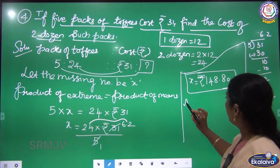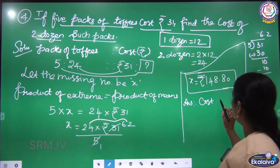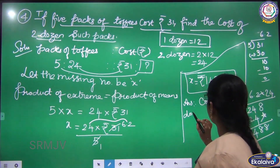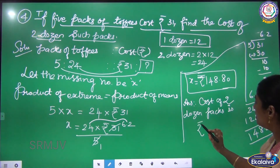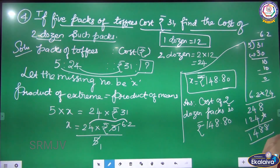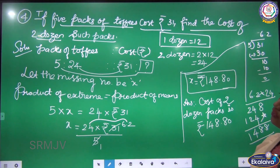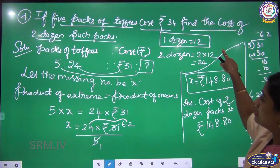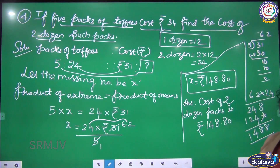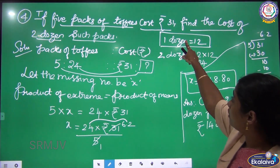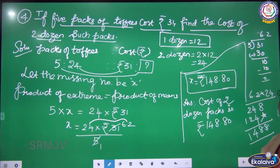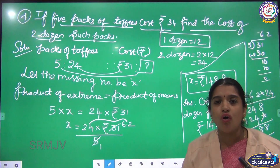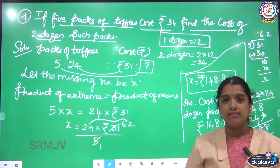Now I am going to write the answer. Cost of 2 dozen packs is rupees 148 rupees 80 paise. First convert dozen to a number: 1 dozen equals 12, so 2 dozen equals 24. Then 5 packs cost rupees 31, so for 24 packs my answer is 148 rupees 80 paise. Children, to receive our online lessons please press the subscribe button and you will receive the latest updates. Thank you.